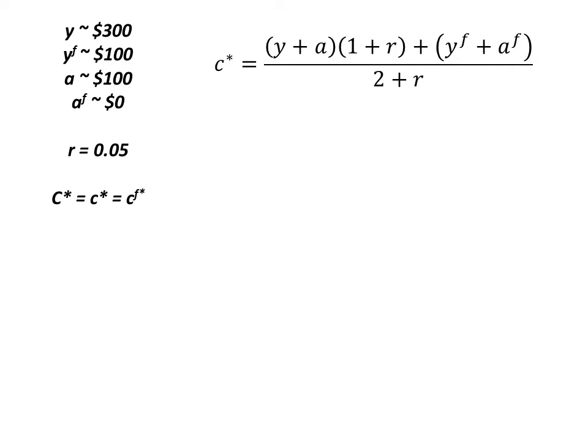When we do that we see that C* is going to equal Y plus A times (1+r) plus YF plus AF, all divided by (2+r). Now we know the formula for current consumption and we just need to plug in our numbers.